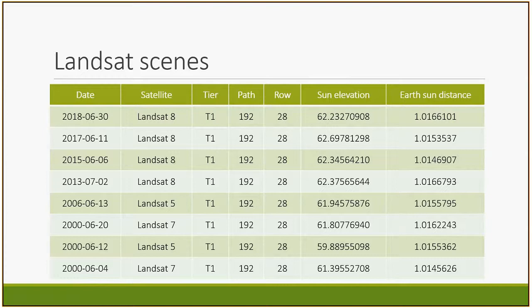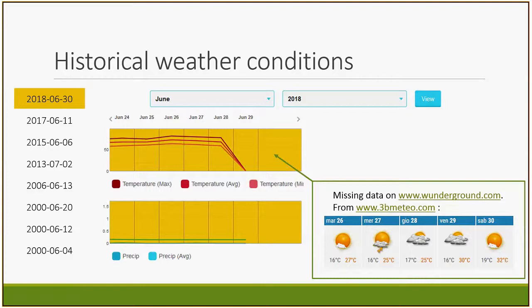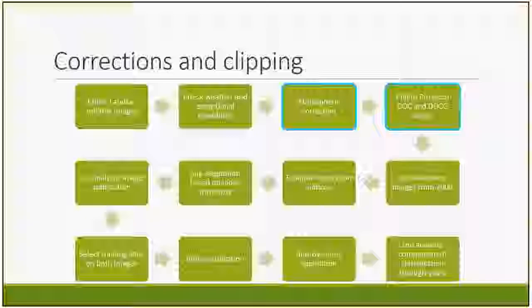I defined a research approach which I will describe step by step. The first is the selection of a suitable satellite and satellite scenes. The choice was straightforward because only the Landsat mission has a catalogue of consistent scenes from 2000 to 2018. I downloaded nine scenes between 2000 and 2018 from Landsat 5 to Landsat 8. The choice of month is important so that phenological aspects do not influence the results.